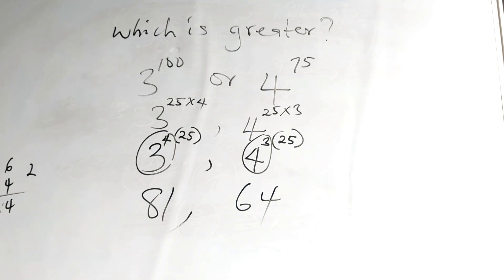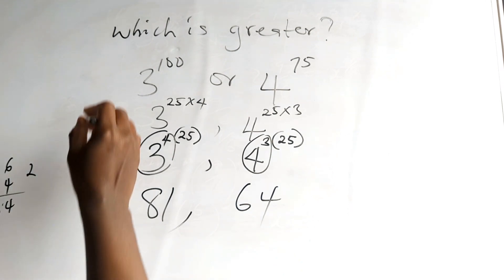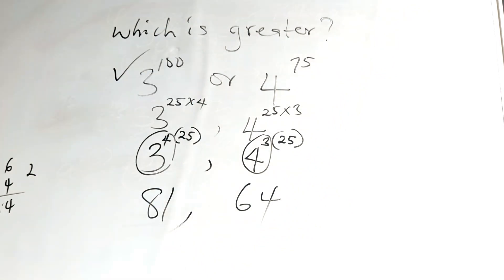So, from here, it's very easy. Now, which is greater? We can now tell that 3 raised to power 100 is greater than 4 raised to power 75 because 81 is greater than 64.